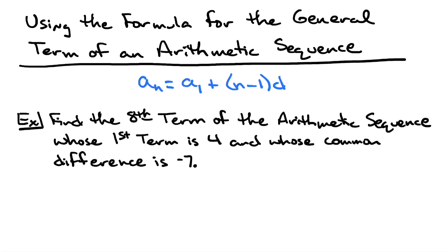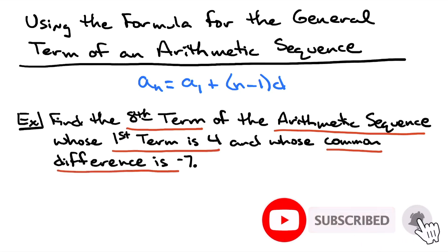Find the eighth term of an arithmetic sequence, so that lets us know we're using this formula, whose first term is 4 and has a common difference of negative 7.